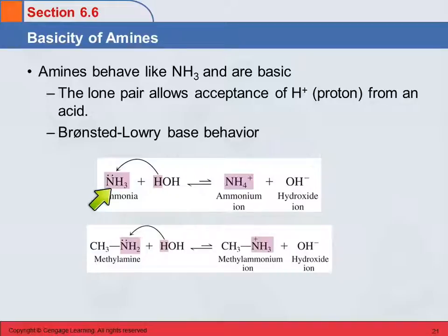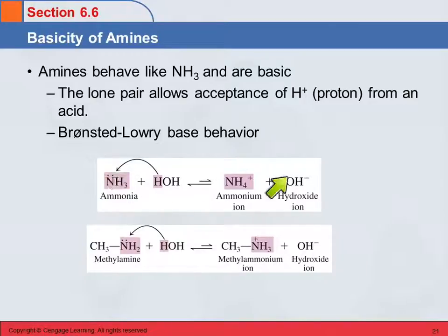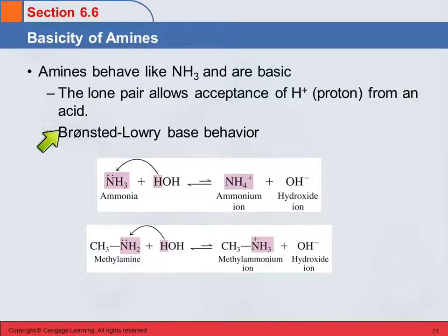Ammonia fits the Arrhenius definition, where it's a substance that produces hydroxide ions in water. So even though ammonia doesn't have hydroxide in it, when you put it in water it produces hydroxide ions. But the definition of acid and base we use mostly in organic chemistry is the Bronsted-Lowry definition, where the base is the proton acceptor.